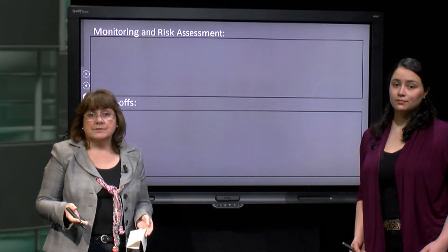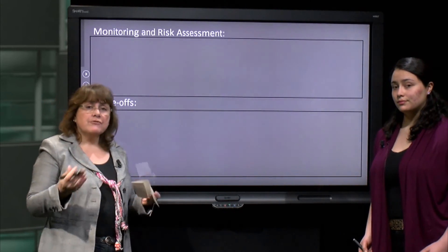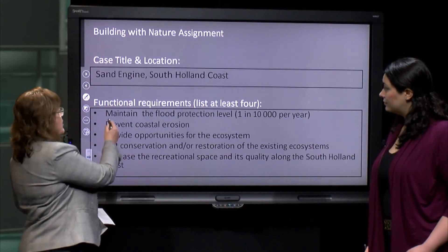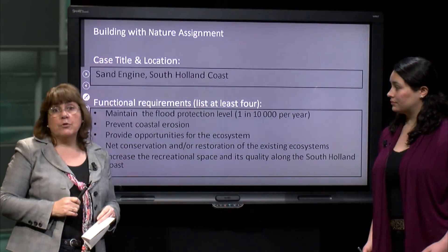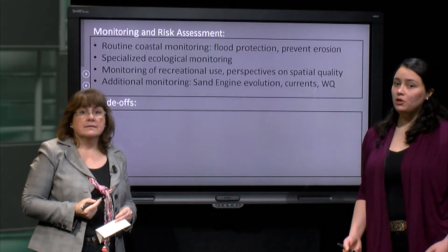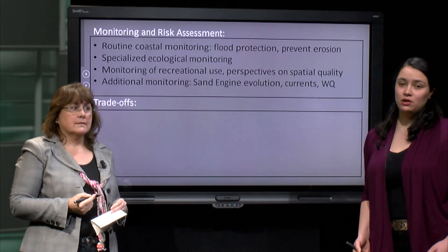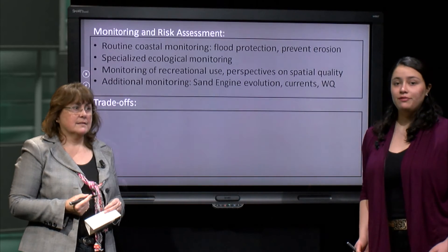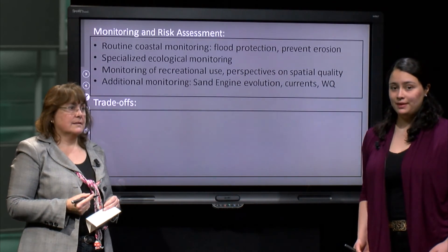Step 5 addresses three issues: why monitoring, what to monitor, and how to cope with risks associated with a building with nature design. To address those issues, we need to return to the functional requirements of the sand engine. Requirements 1 and 2 are addressed by the routine monitoring of the Dutch coast. Requirements 3 and 4 require specialised monitoring because of the uncertain nature of their performance over time and space. Requirement 5 also needs specialised monitoring. Foreseeable undesirable developments are identified in a risk assessment — for the sand engine these include ecological risks such as colonisation by invasive species and water quality outside the natural range, and engineering risks such as the sand moving northward or offshore at a rate greater than expected. The monitoring is designed to provide early warning signals of undesirable developments and allow risk mitigation.